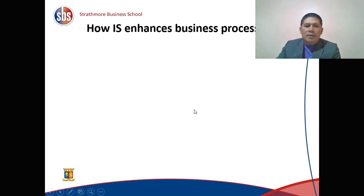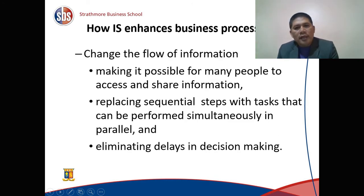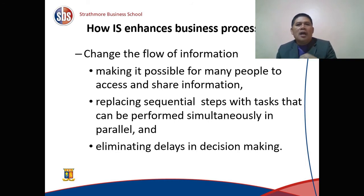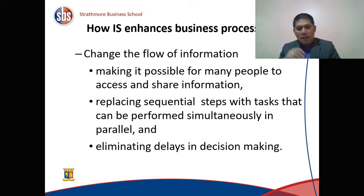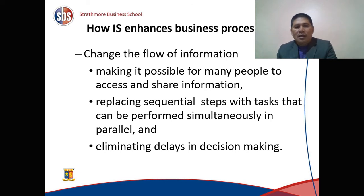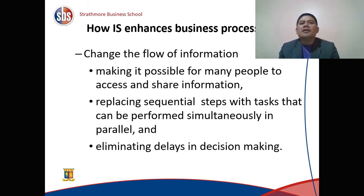We can automate many steps in a business or change the flow of information. In the past, it was very sequential. Today, it could be multi-access, multitasking, and multi-processing — making it possible for many people to access and share information simultaneously. We can replace sequential steps with tasks performed in parallel, and this also helps in eliminating delays in decision-making.